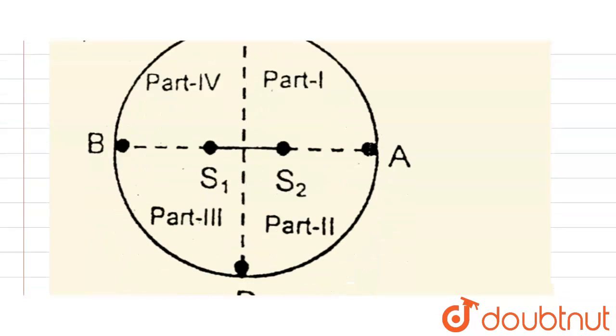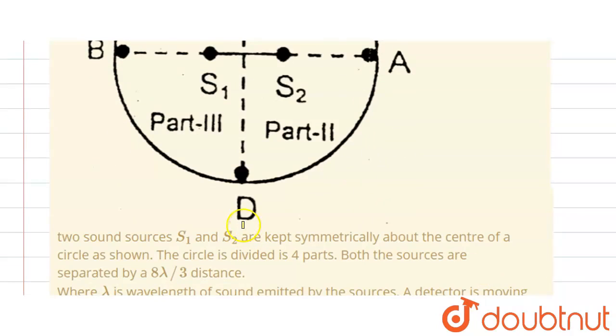The question is given this diagram. Here two sound sources S1 and S2 are kept symmetrically about the center of a circle as shown. The circle is divided into four parts. Both the sources are separated by 8λ/3 distance.